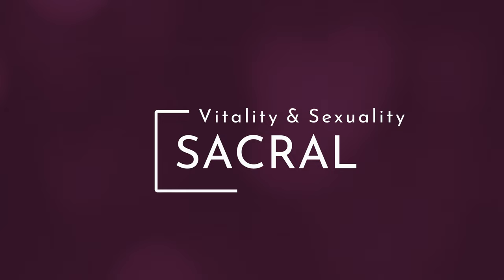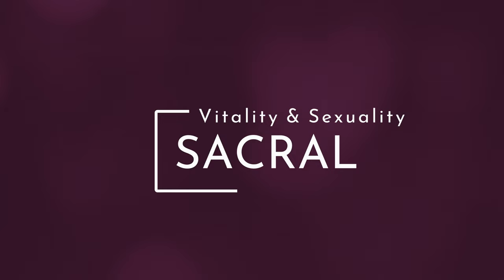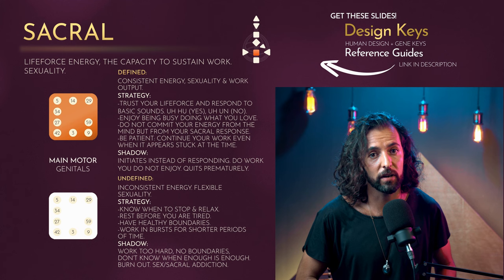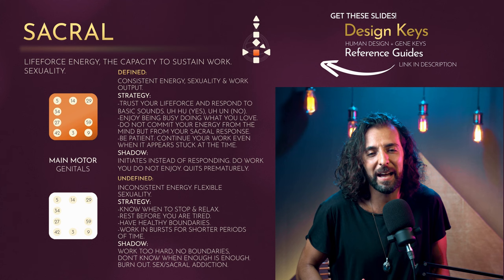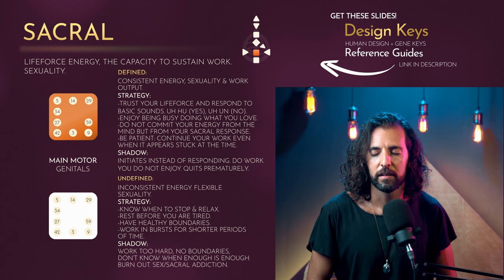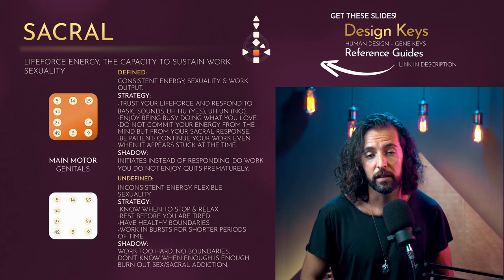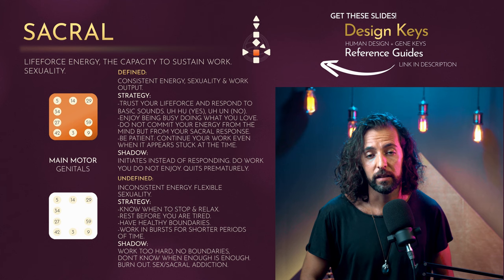Moving on to the sacral center — this is a defining center because it's what makes you a generator or not, or any of the other types. This center is about life force, vitality, and basic capacity and energy to do things and work in the world. Using Gene Keys keywords, you can go from reacting to things in an unhealthy way, to responding and being stimulated by the world, to just flowing to the rhythms of life and contact with all other beings around you.